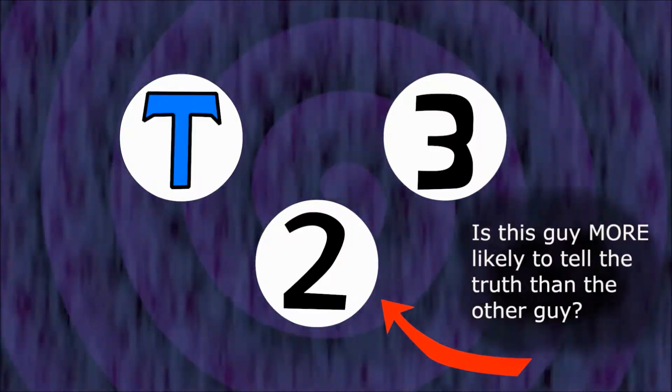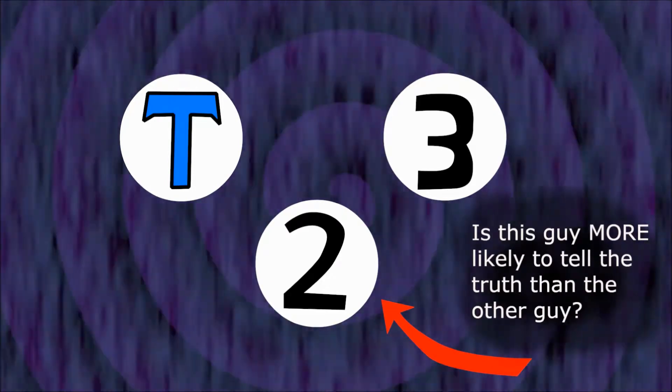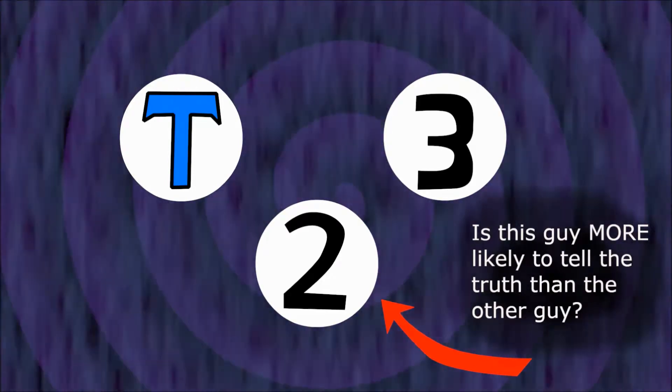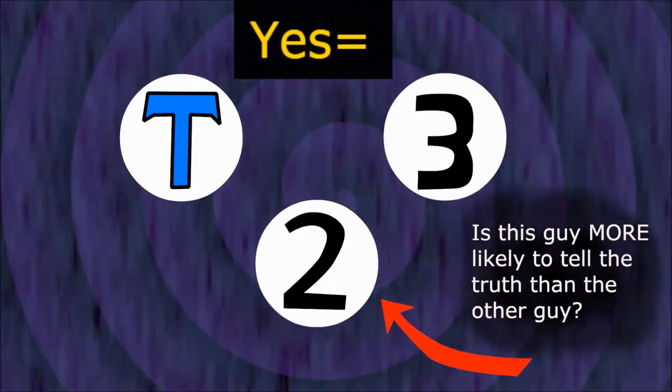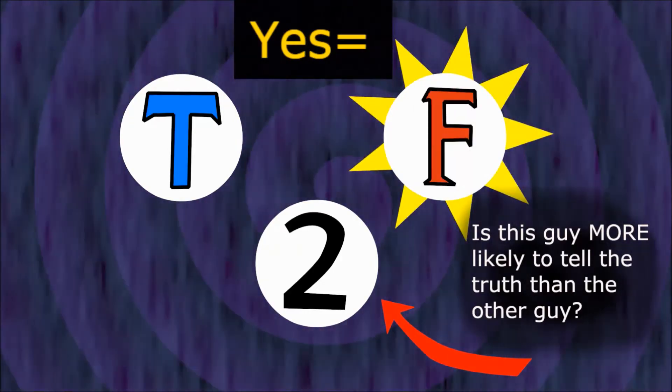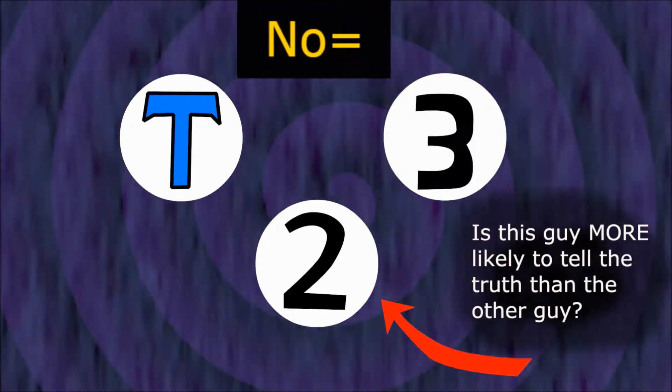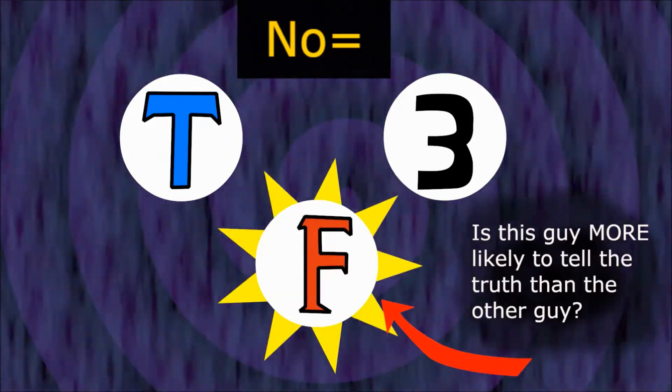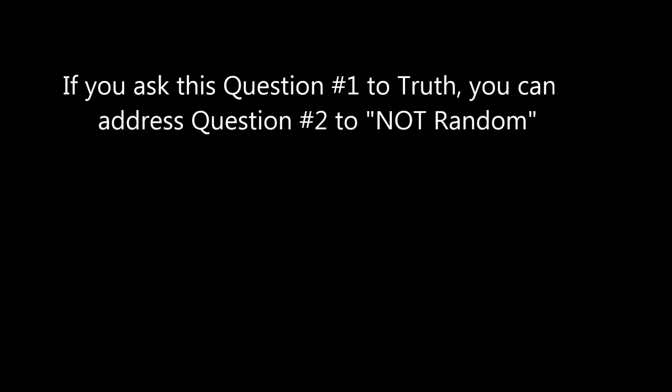Let me prove it. Suppose prophet one was Truth. According to Truth, False will be the prophet less likely to tell the truth. So if he says yes, then three is less likely to tell the truth than two, which means that three is False. If Truth says no, then two is less likely to tell the truth, so two is False. So if prophet one is Truth, and you address question two to the prophet least likely to tell the truth, then you were talking to False. That's not Random, so it works.